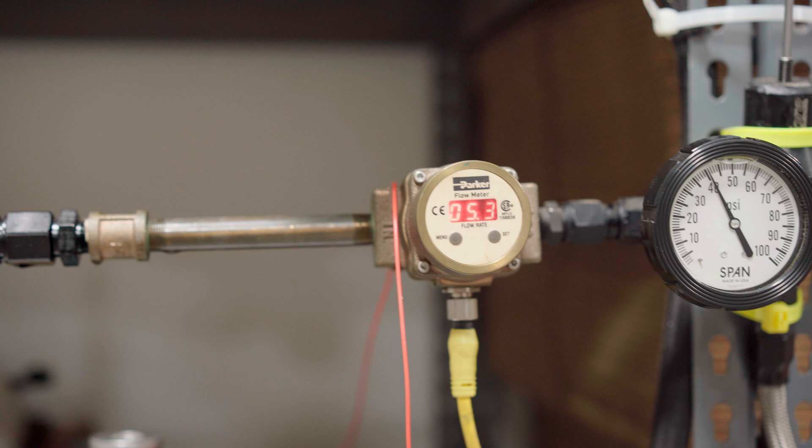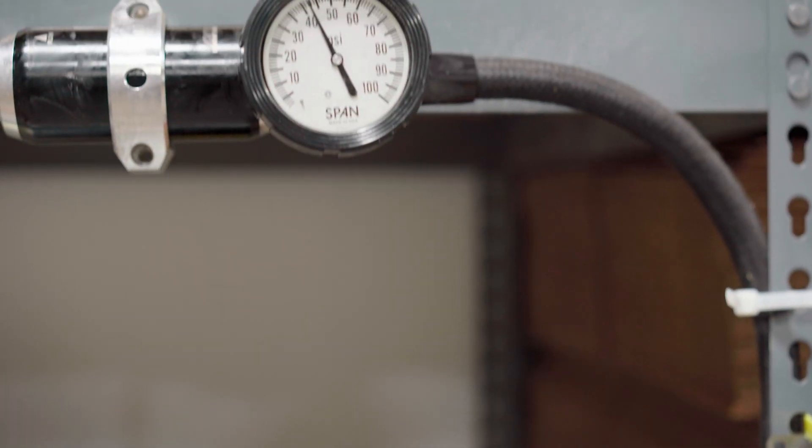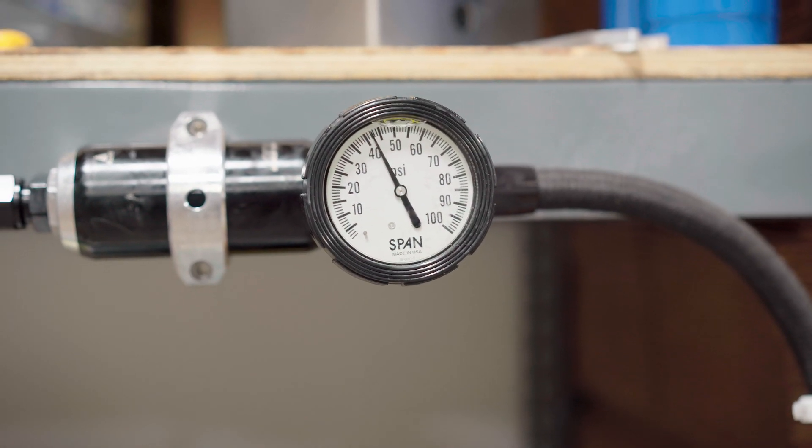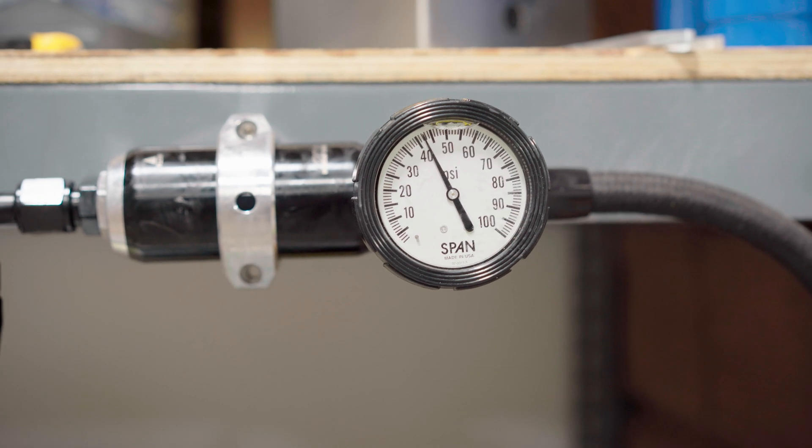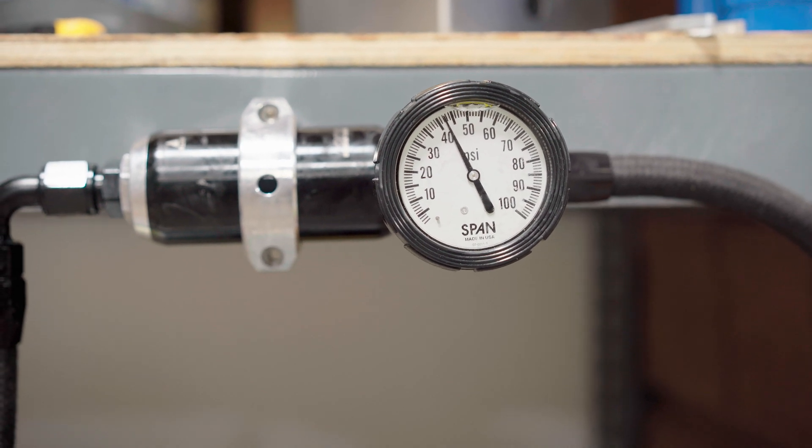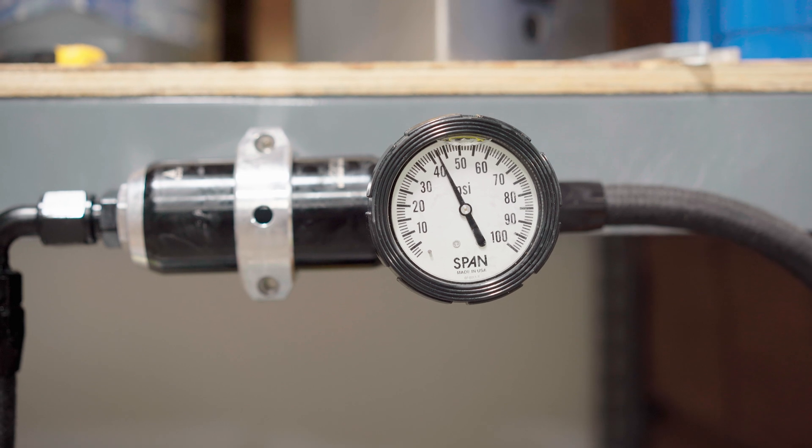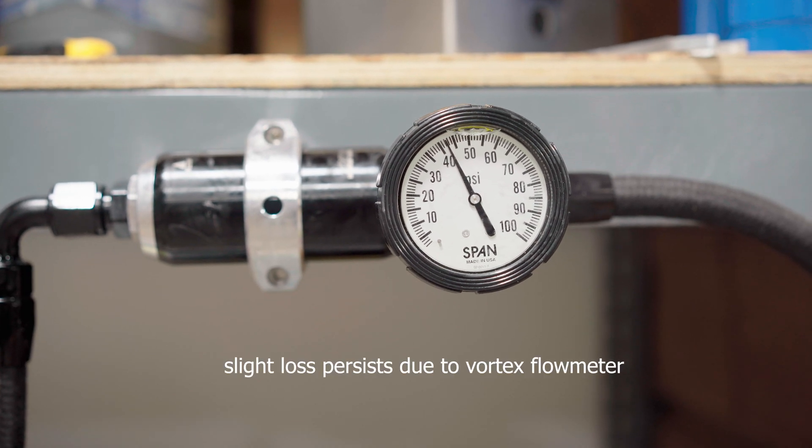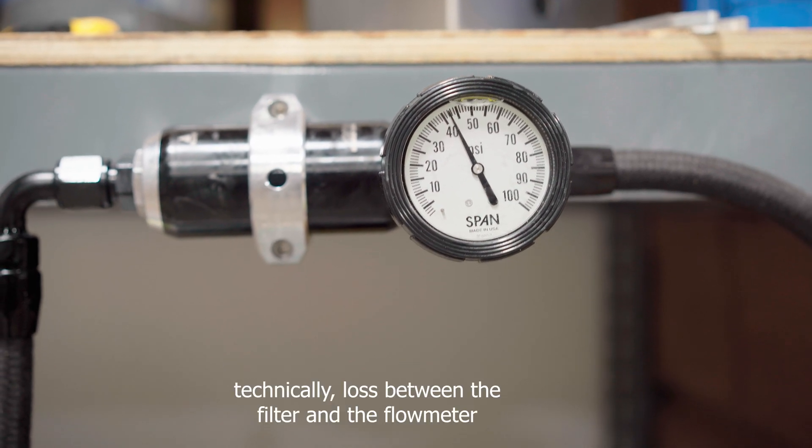Let's go back up and see what our pressure is before the filter. Now we're at about 43 psi, 42 psi. So now we have about a 2 to 3 psi loss across this filter, and we have much better performance out of our fuel pump.